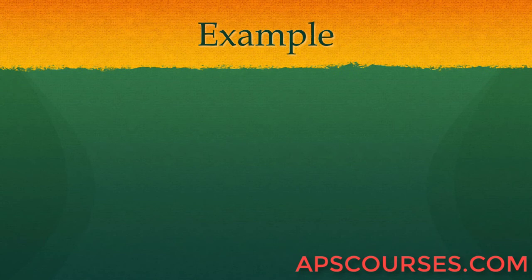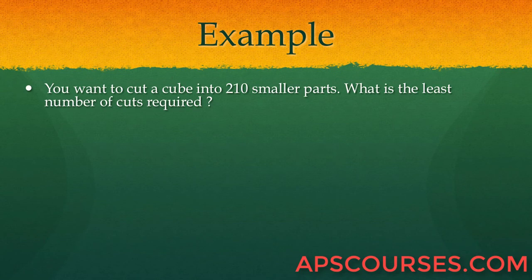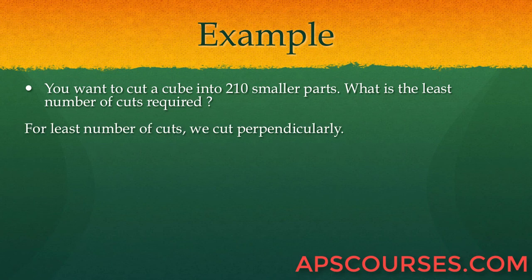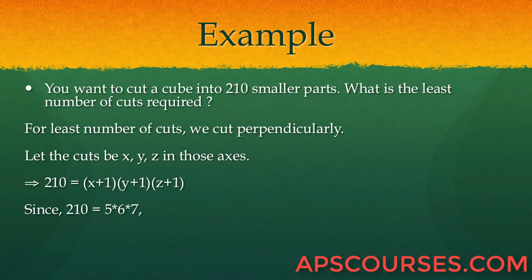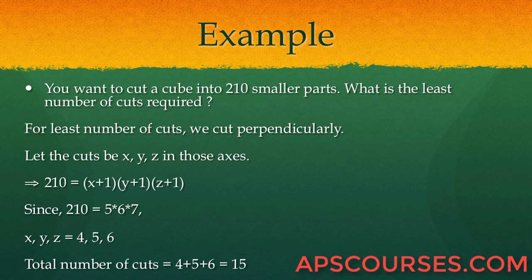Example: You want to cut a cube into 210 smaller parts. What is the least number of cuts required? Since we need the least number of cuts, we should cut perpendicularly. Let the cuts be x, y, z along the 3 axes. Therefore, 210 = (x+1)(y+1)(z+1). The most equal factorization is 210 = 5 × 6 × 7, so x, y, z are 4, 5, and 6. Hence the total number of cuts is 15.